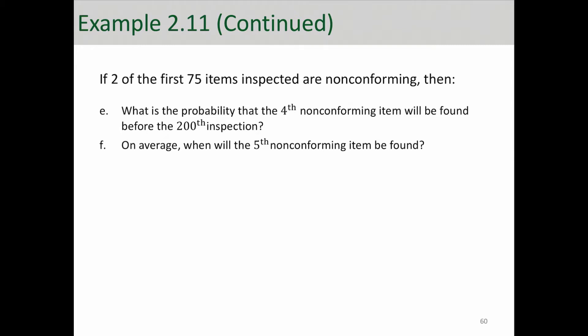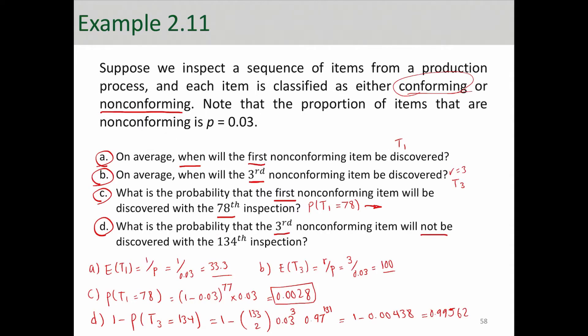Well, I want to remind you about the original example. This example is inspecting items that are coming out of a production line, and we're classifying them as either conforming or non-conforming. The probability that an item is non-conforming is 3%, essentially probability of success.